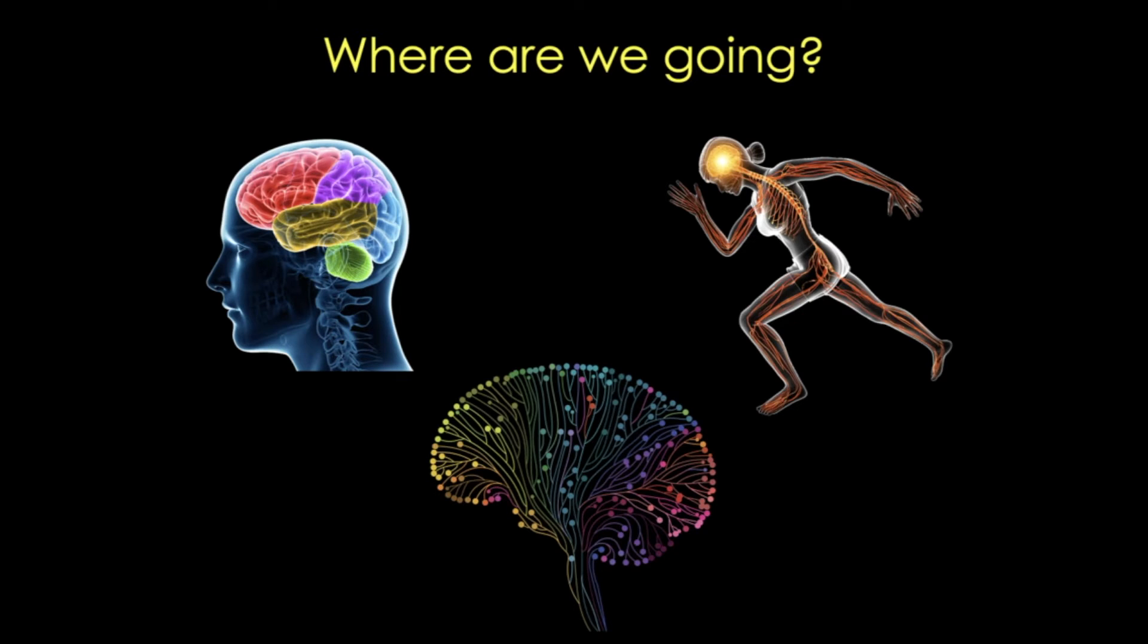The nervous system is one of the earliest systems to begin development and one of the last to be completed after birth. This developmental process generates this most complex structure within the embryo, but it also means that in utero insults during the months of pregnancy can have all different kinds of consequences.